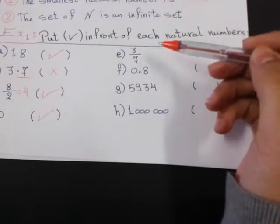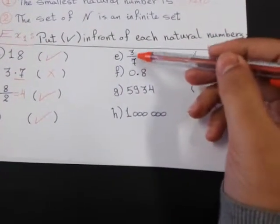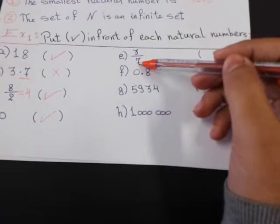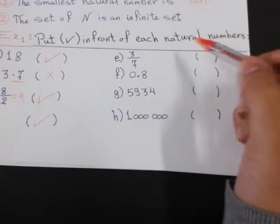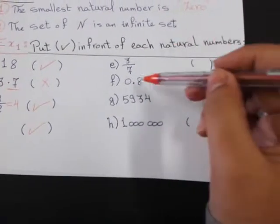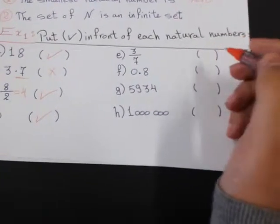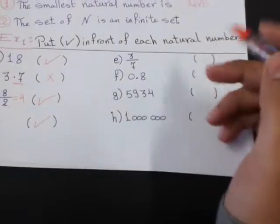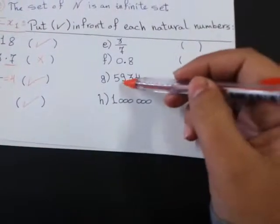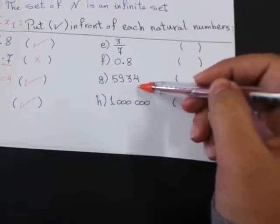3 divided by 7. It has no answer. So, 3 over 7 is a decimal number or fraction number, so it's not natural. 0.8 or 8 tenths. It's not natural also because it's a decimal. 5,934.